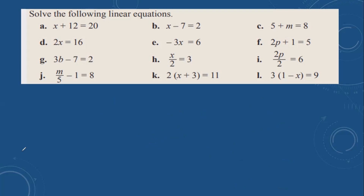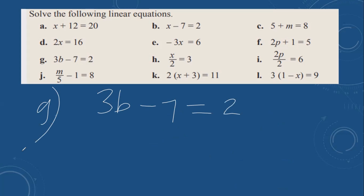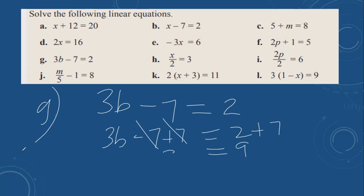The next one, g: 3b minus 7 equals 2. The opposite of minus 7 is plus 7. Do the same to the other side. These cancel out, giving 3b equals 9. So you can divide both sides by 3. Then b is equal to 9 divided by 3, which is 3.